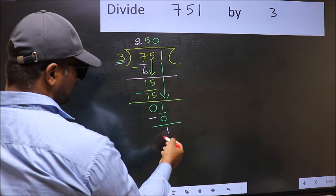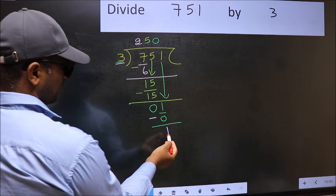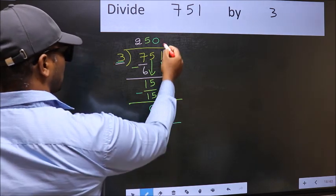Over here, we did not bring any number down. And 1 is smaller than 3. So now we put a decimal point and continue.